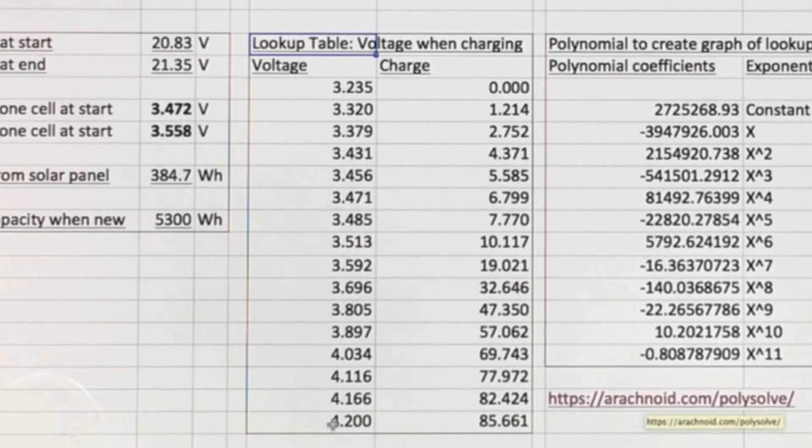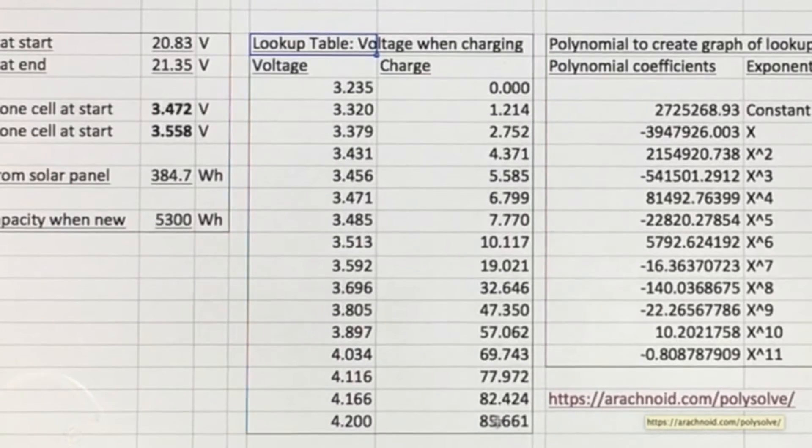Whereas when you get up to 4.2 volts here, as soon as you hit that 4.2 volts you'll be 85.661% charged. Then you keep it at 4.2 volts for a few hours and you will get up to the full 100% charge.